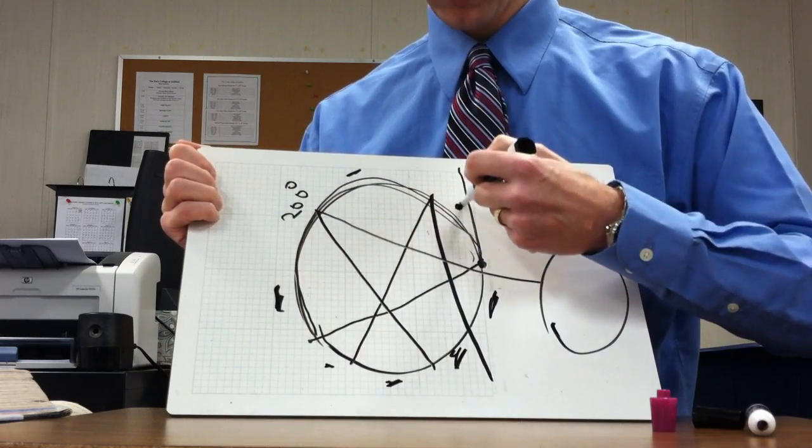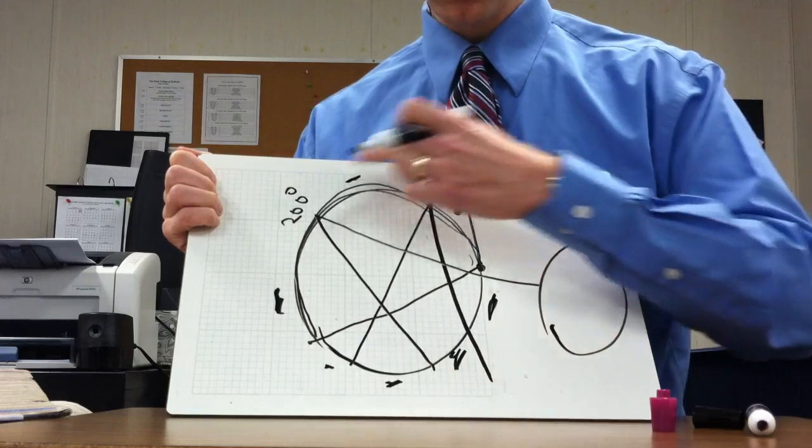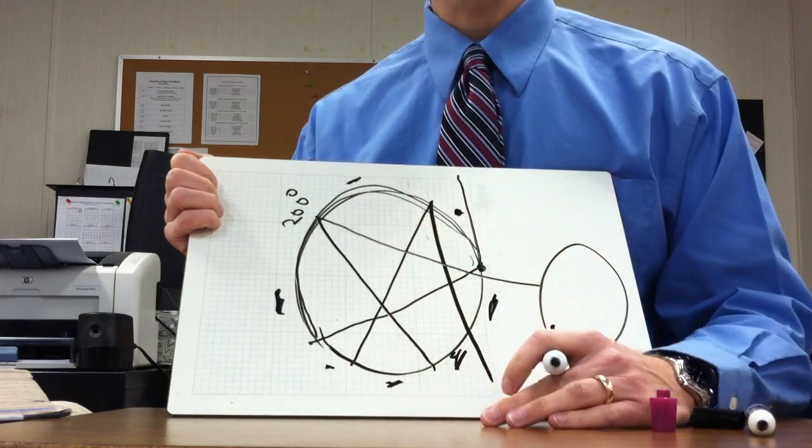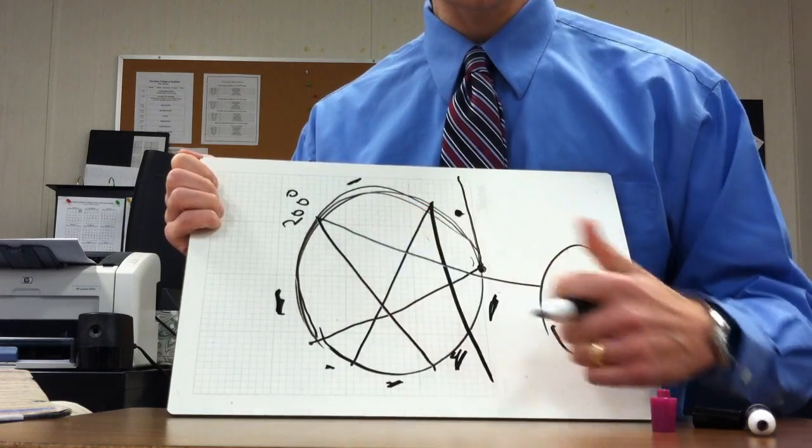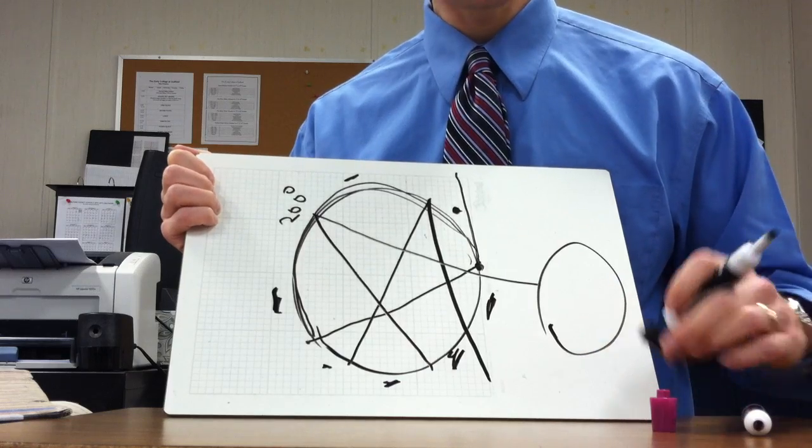But the key to being able to do these is figuring out all of the missing arc measures. So if I'm doing a big picture like that, I would figure out all the arc measures first and then start answering the questions, or then start finding all the angles. Okay, and you'll see what I mean when you start practicing those.